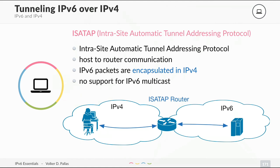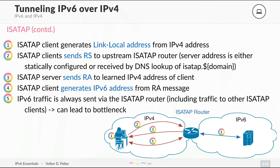To generate an IPv6 address with ISATAP: first, the client generates a link-local address from its own IPv4 address. Second, the client sends a router solicitation to its upstream ISATAP router, which can be found via DNS lookup of isatap.yourdomain or can be statically configured. These packets are encapsulated in IPv4 and sent through the IPv4 network to the router, with a router solicitation inside. The ISATAP server then sends back a router advertisement to the IPv4 address of the client.